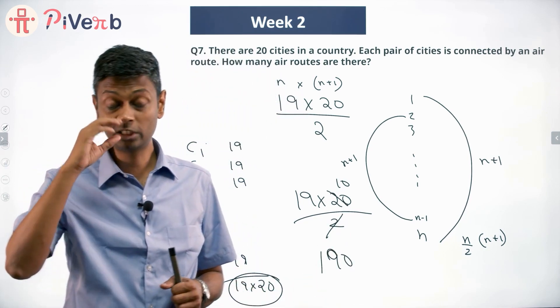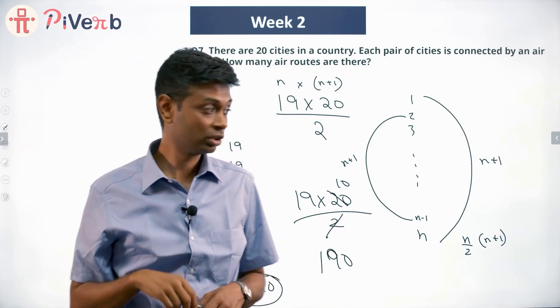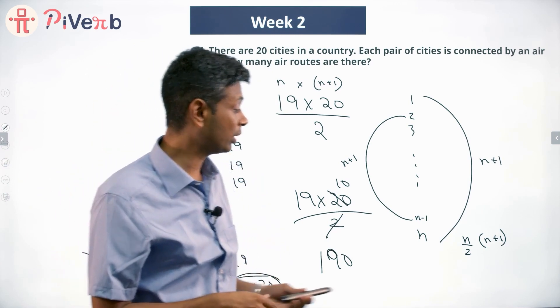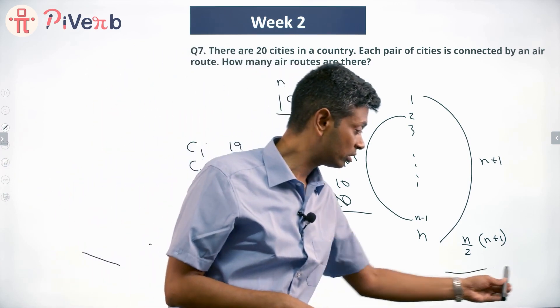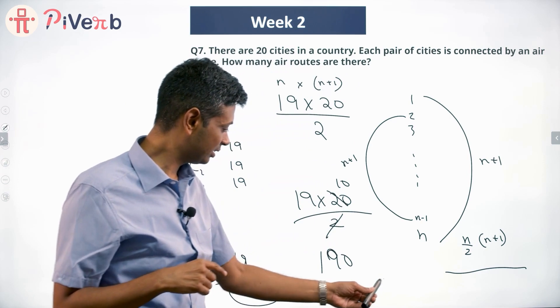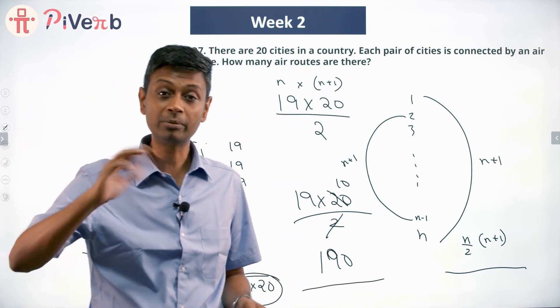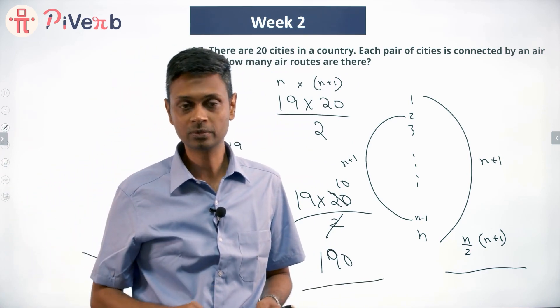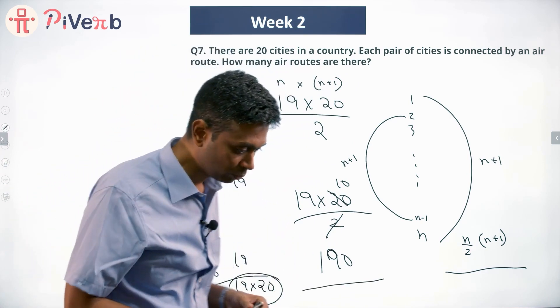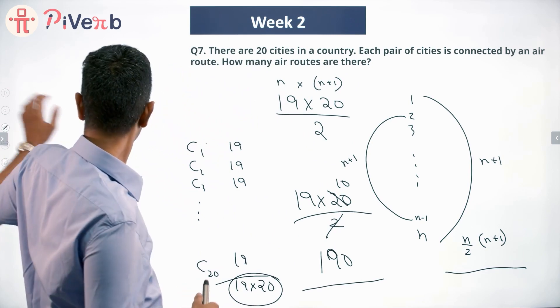So we have two different ways of thinking about this: one is the straightforward sequential approach we saw first, and the other is the double-counting approach where we count all routes from every city and then divide by 2. Both give 190.